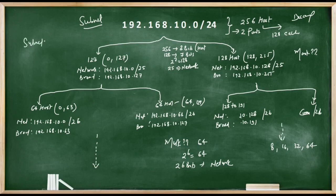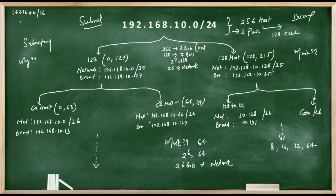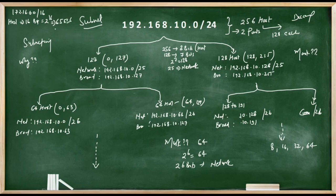One interesting question arises here: why is there a need to divide a particular network? Consider network 172.16.0.0/16. In this network, the host part is 16 bits, which means we can have two to the power 16, or 65,536 hosts. Maintaining a single network of approximately 65,000 hosts presents several technical challenges, and hence it is wiser to divide this large network into smaller networks.